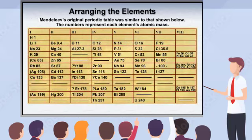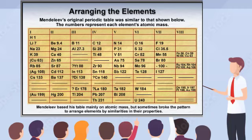Mendeleev organized the elements according to similarities in their physical properties to help his chemistry students more easily learn about the elements. He based his table mainly on atomic masses, but sometimes broke the pattern to place elements in columns according to periodic similarities in their properties. For instance, although it left gaps in his groups 3 and 4, he placed arsenic under phosphorus because it had similar chemical properties. He also placed iodine after tellurium, even though the atomic masses were out of sequence.